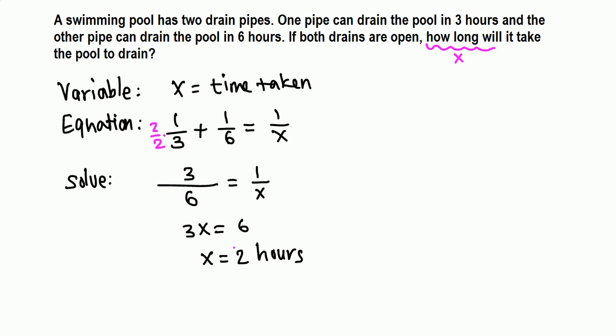We need to check if this answer makes sense. One pipe can drain the pool in three hours and the other in six hours. When both drains are open, the pool is drained faster, so it should be less than three hours. We got two hours, and this makes sense. This is the answer.